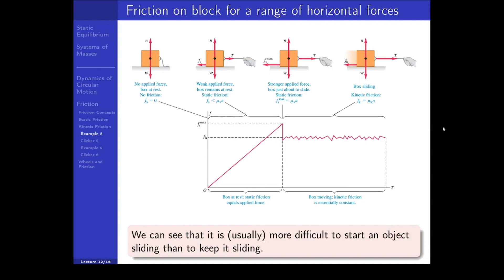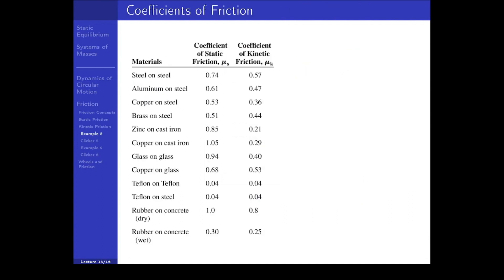It's usually more difficult to start an object sliding than to keep it sliding — you've probably found the same thing with physics homework: it's really hard to start, but once you start it's a blast. The coefficient of friction between surfaces can be looked up in a table. For example, rubber on concrete has a relatively large coefficient of friction, as we would want — we don't want our wheels to slide when driving a car.